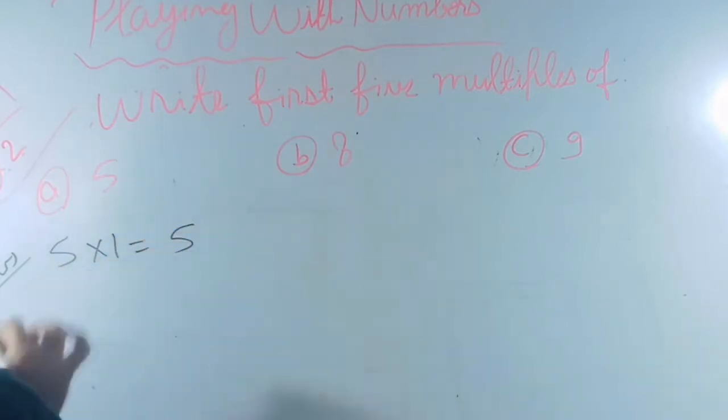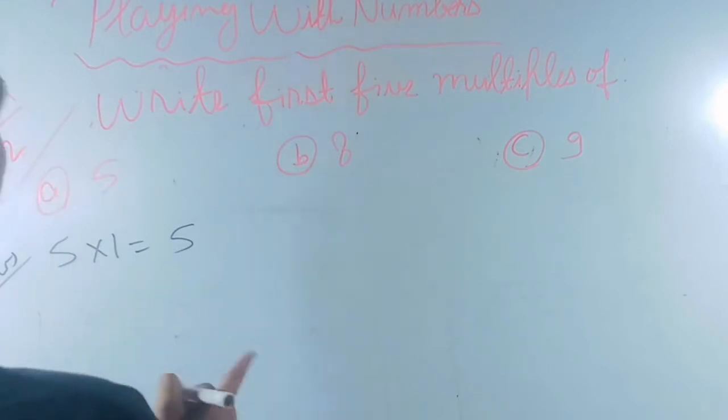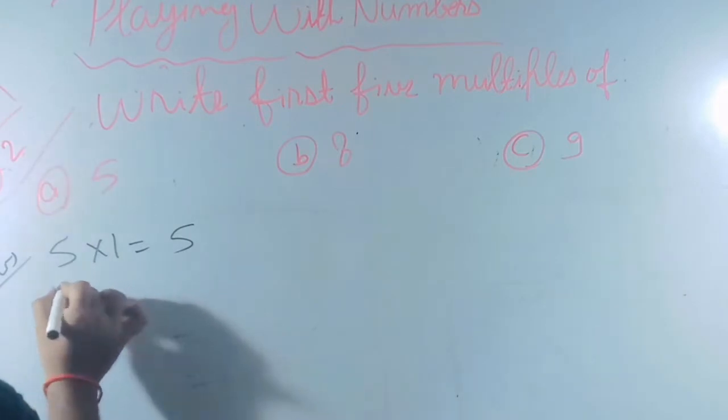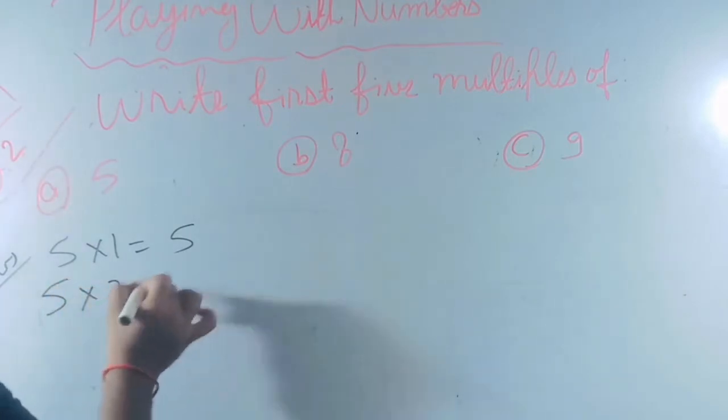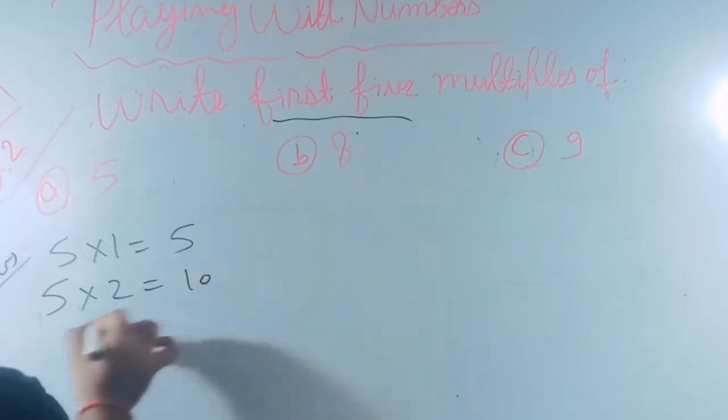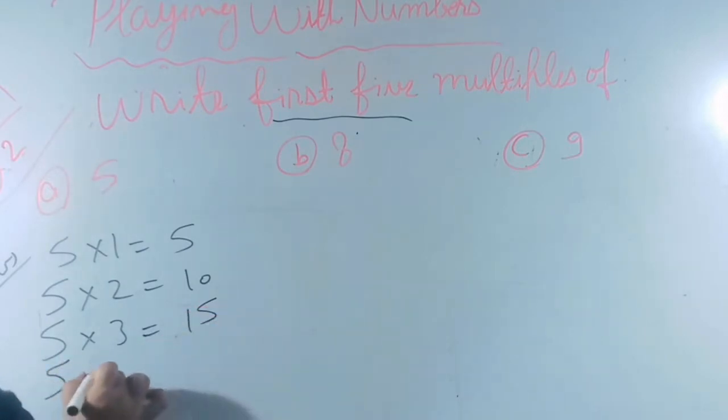According to the rule, the number itself is a multiple of the number. To find first five multiples: 5 multiply 2 equals 10, 5 multiply 3 equals 15, 5 multiply 4 equals 20, and 5 multiply 5 equals 25.